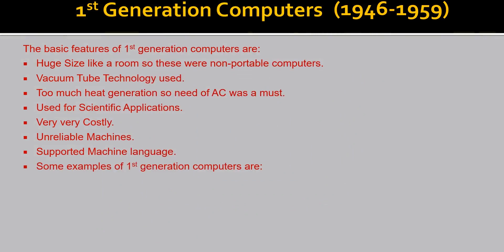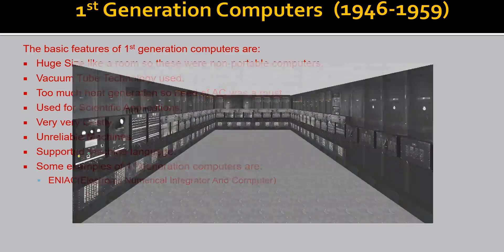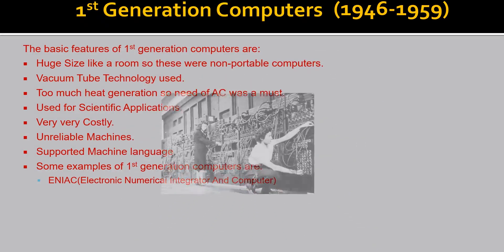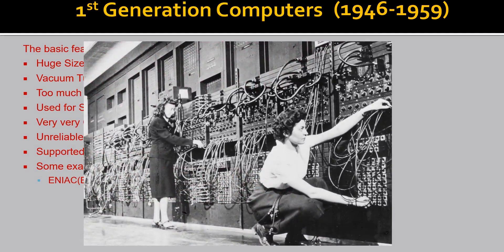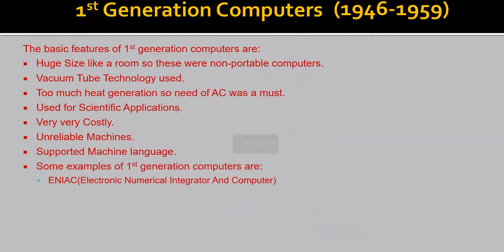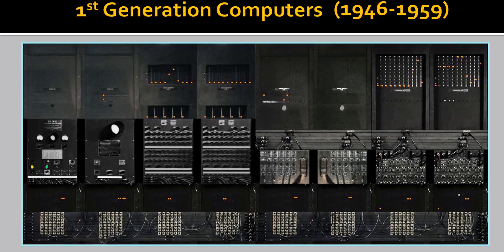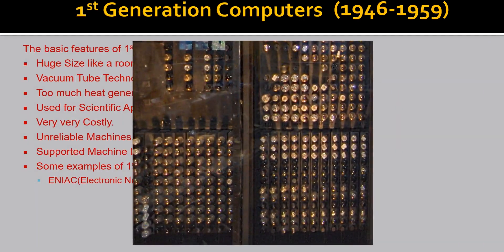Let us see some examples of 1st generation computers. The first is ENIAC — Electronic Numerical Integrator and Computer. As you can see in the image, it is the size of a huge room. In this picture, maintenance of the computer is being performed. This is a small part of the large computer in which circuits are shown, and you can see vacuum tubes being inserted.